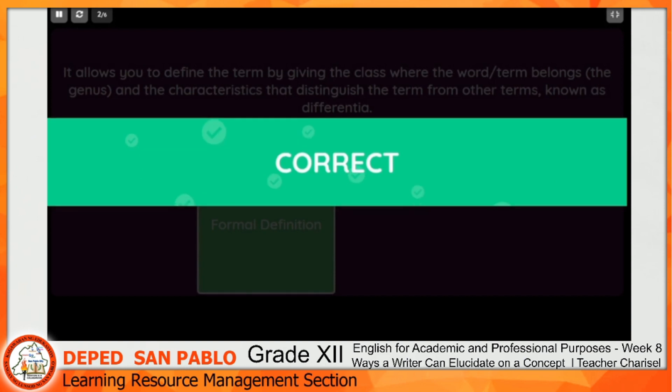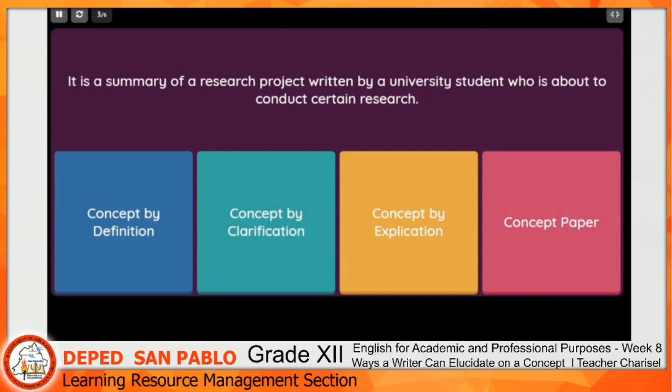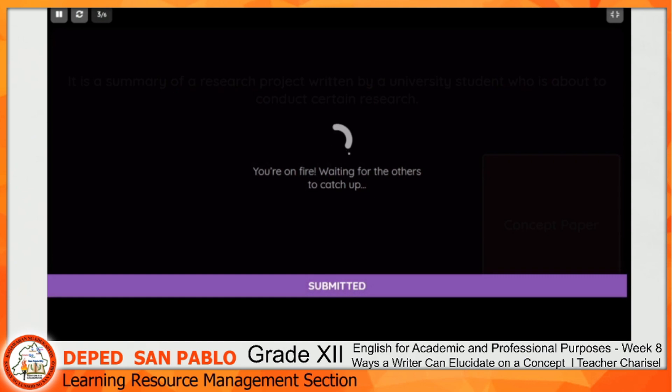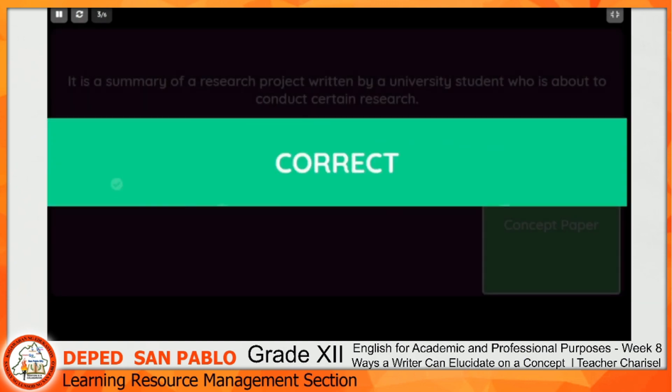You got it correctly. Question number three: It is a summary of a research project written by a university student who is about to conduct certain research. Choices are concept by definition, concept by clarification, concept by explication, or concept paper. The correct answer is concept paper.